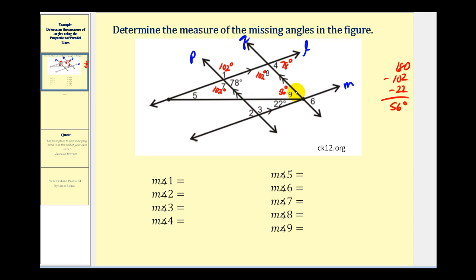This angle here and this angle here are vertical angles and therefore congruent. So this angle would be fifty-six degrees plus twenty-two degrees, giving us seventy-eight degrees. So angle six is seventy-eight degrees.